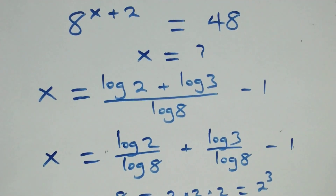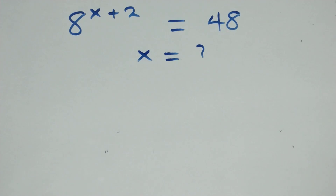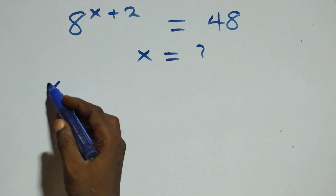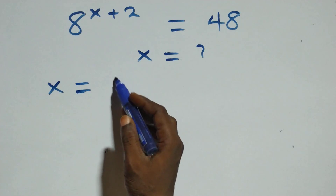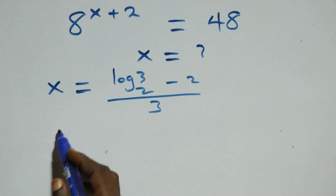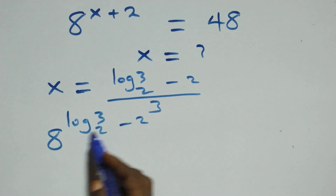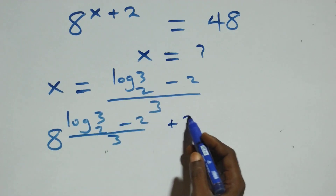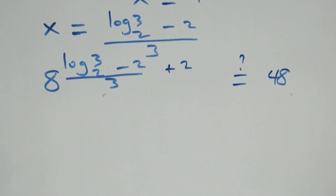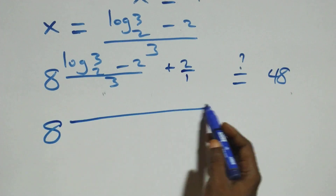Let's check if we satisfy this given problem. We substitute the value of x, which is x equals log 3 base 2 minus 2, all over 3. What we have becomes 8 raised to power log 3 base 2 minus 2 all over 3, then plus 2, equals 48 on this side. We can bring this power together: this 2 over 1 gives 8 raised to power x, that's 3.